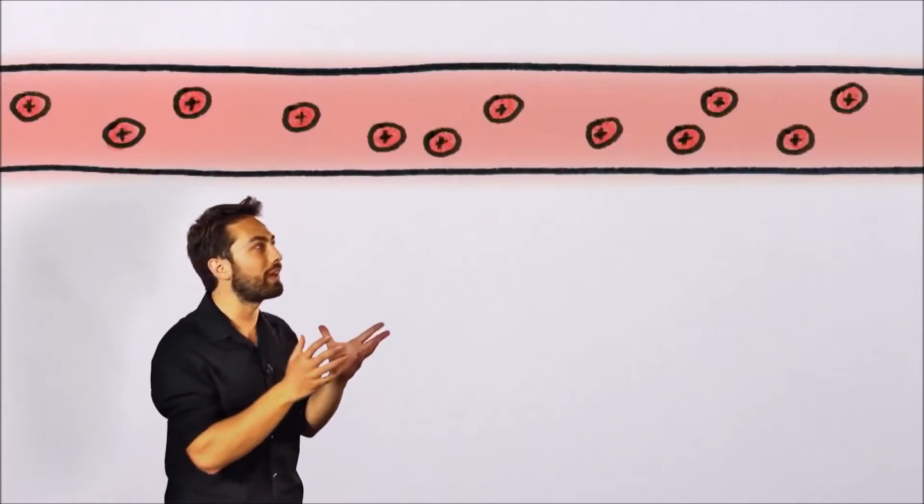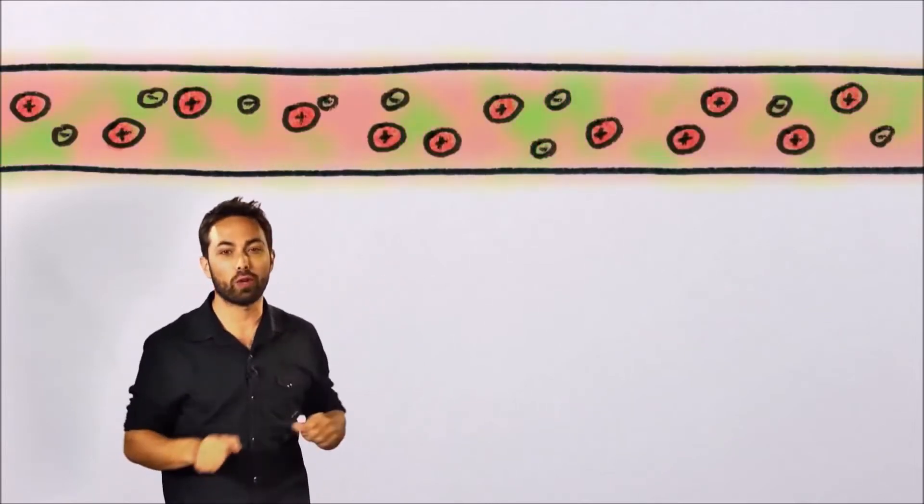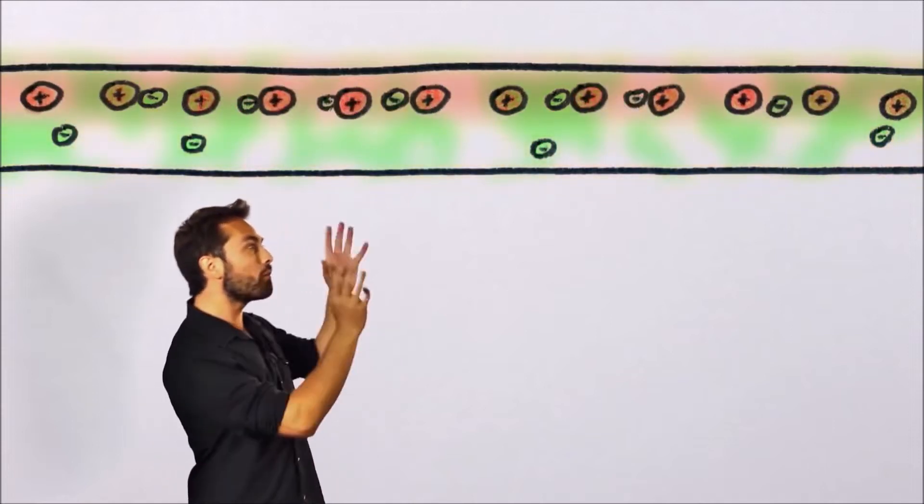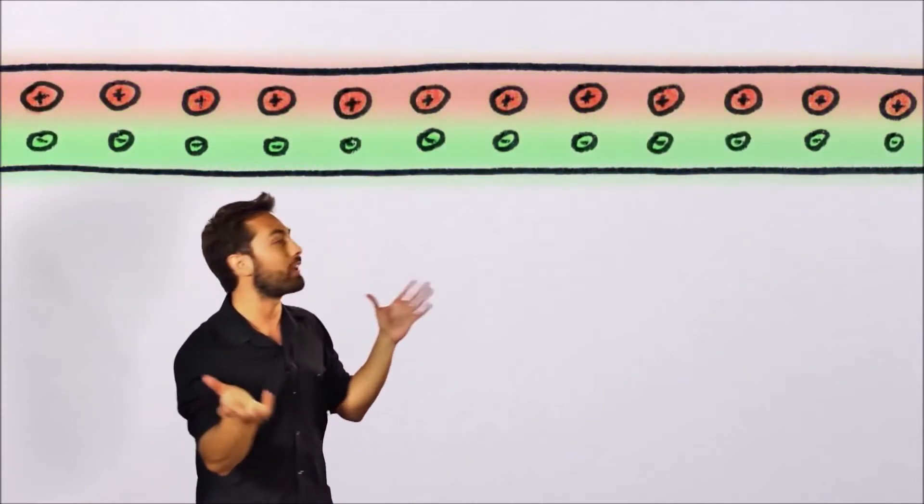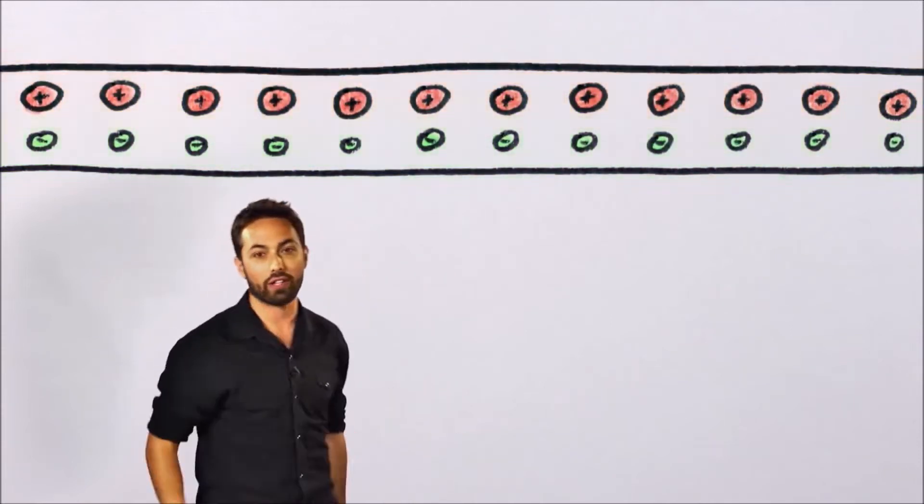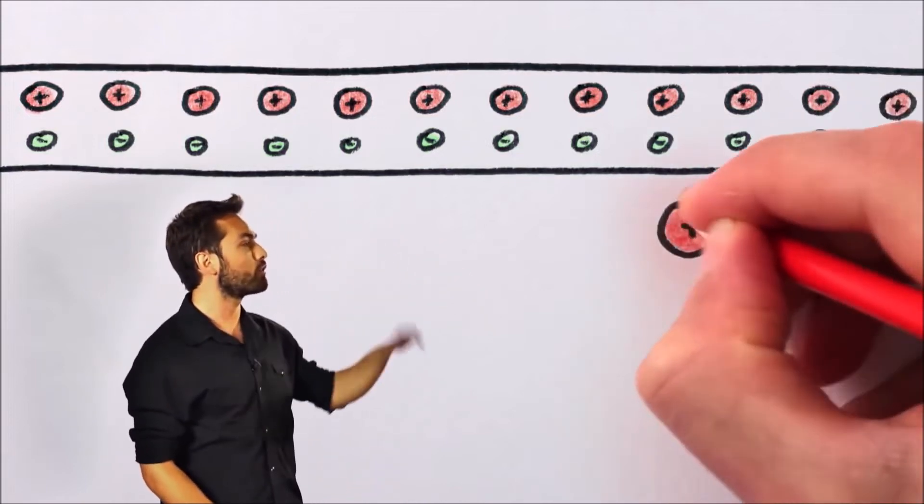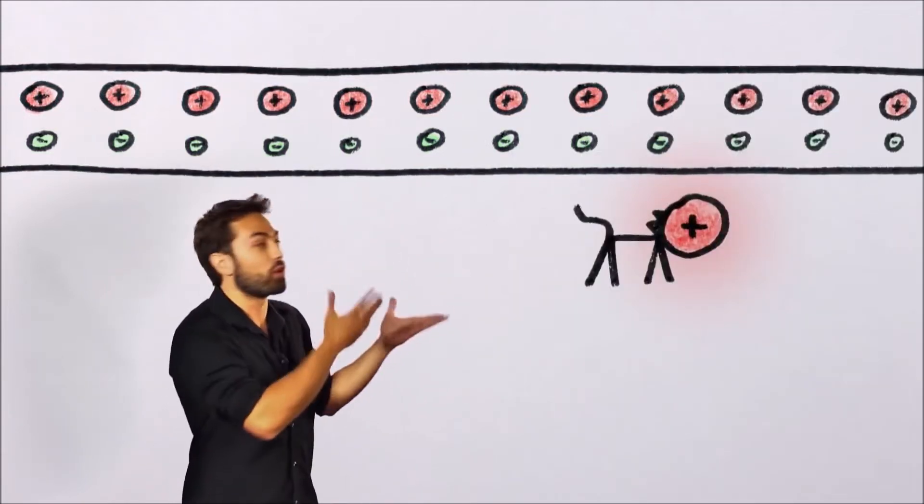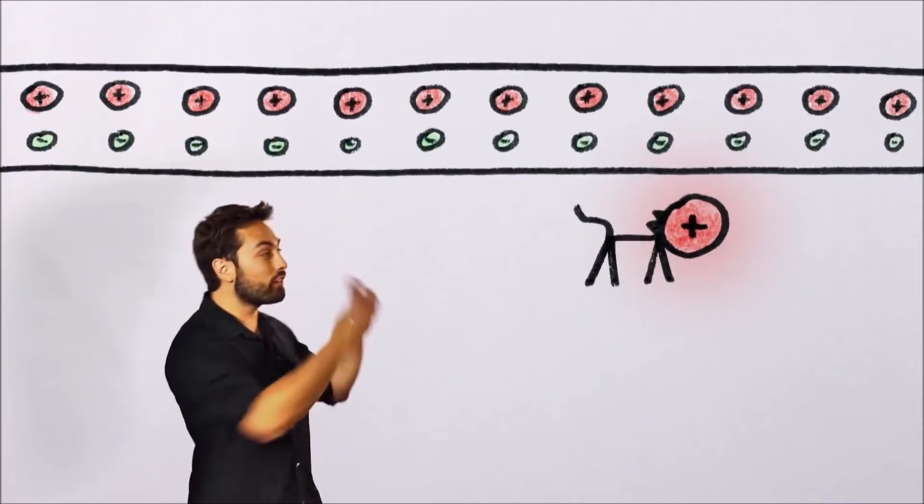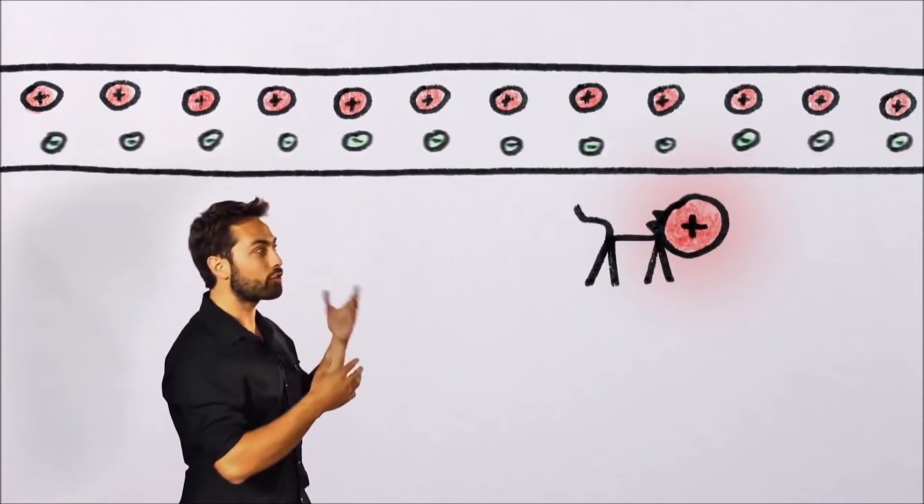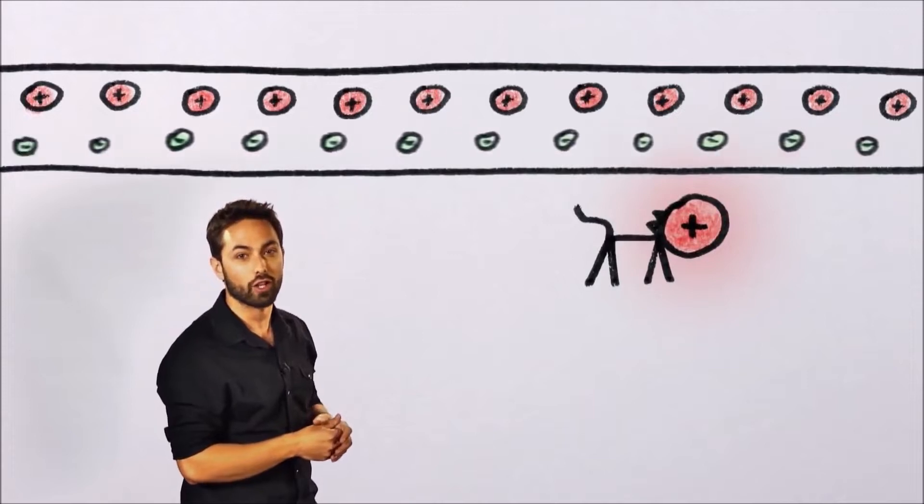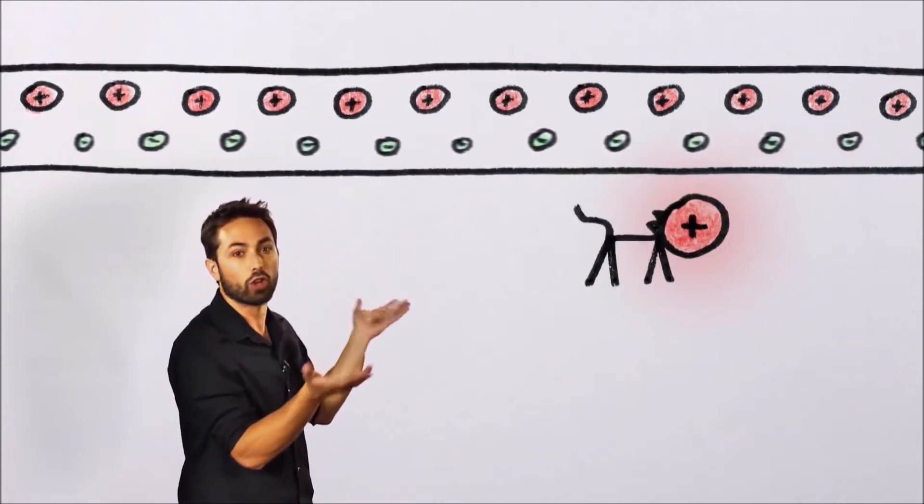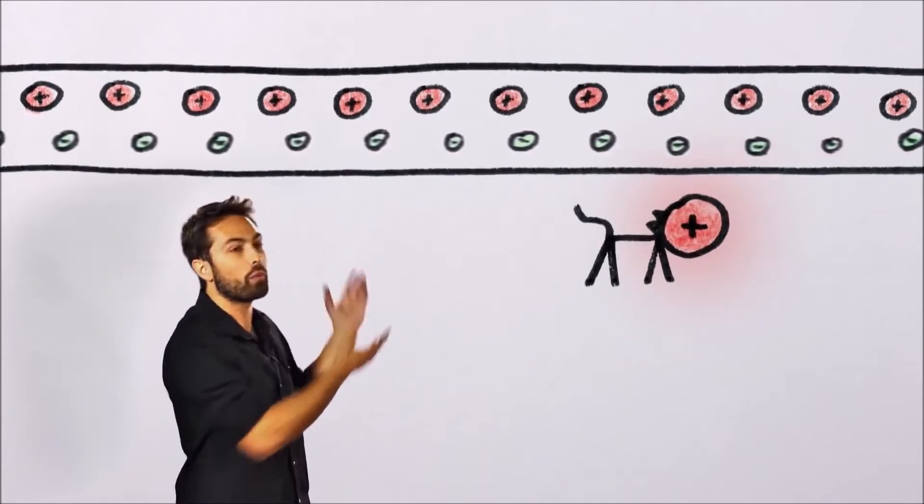It consists of positive metal ions swimming in a sea of free negative electrons. Now the number of protons is equal to the number of negative electrons, so overall the wire is neutral. So if there were a positive charge or positively charged cat nearby, it would experience no force from the wire at all. And even if there were a current in the wire, the electrons would just be drifting in one direction, but the density of positive and negative charges would still be the same, and so the wire would be neutral.